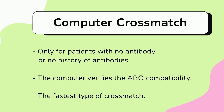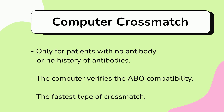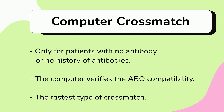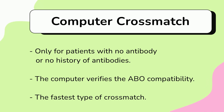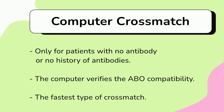Today we have computer crossmatch, which has become more widely used in recent years. Computer crossmatch is strictly used for patients without antibodies or no history of antibodies. We would randomly select ABO-compatible units from the stockpile and crossmatch them to the patient. The computer verifies that the unit is ABO compatible with the patient. Unlike immediate spin or other types of crossmatch, in computer crossmatch it is the computer — not the CLS — doing the verification. The benefit of computer crossmatch is that it is the fastest and cheapest way.